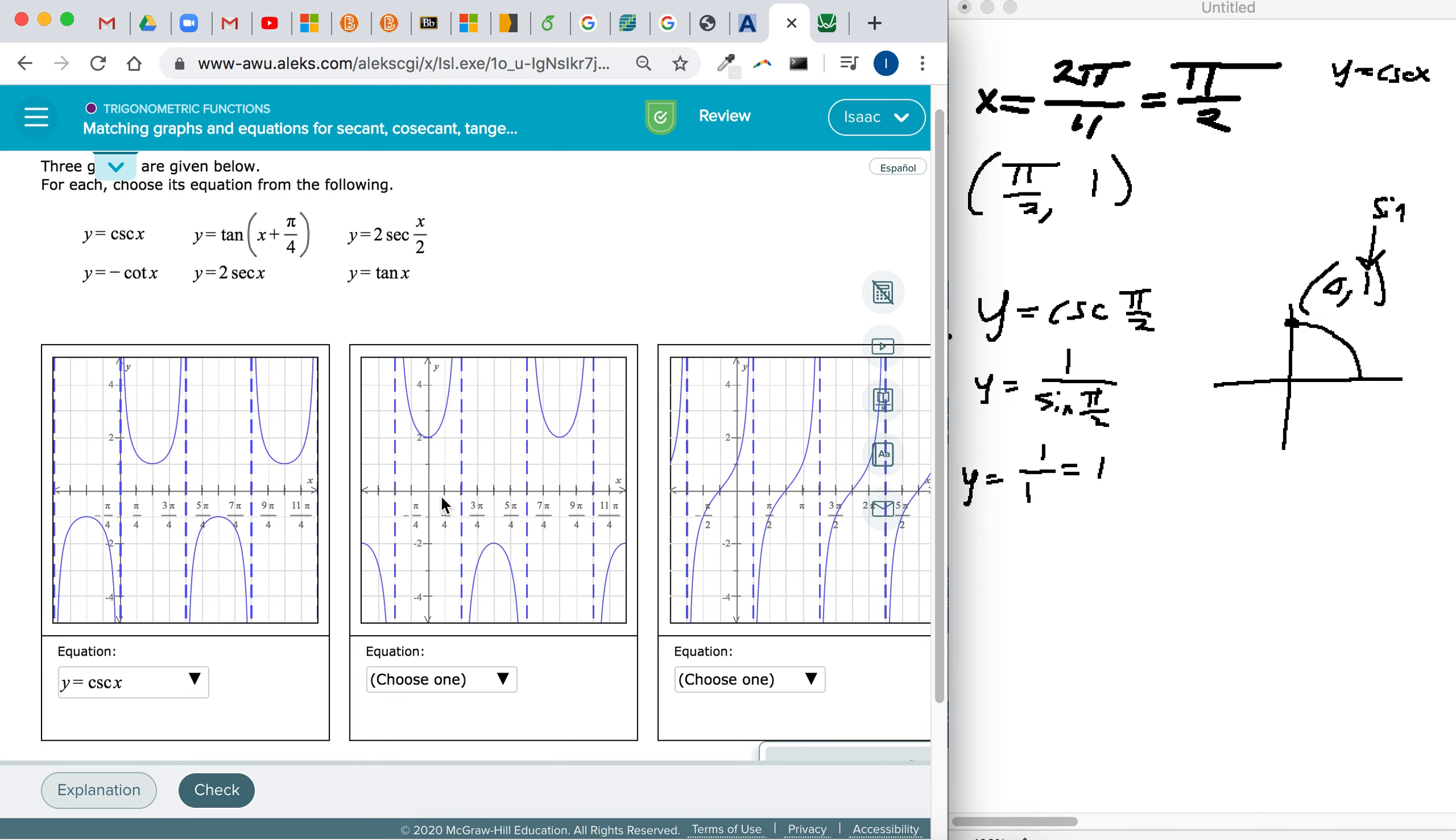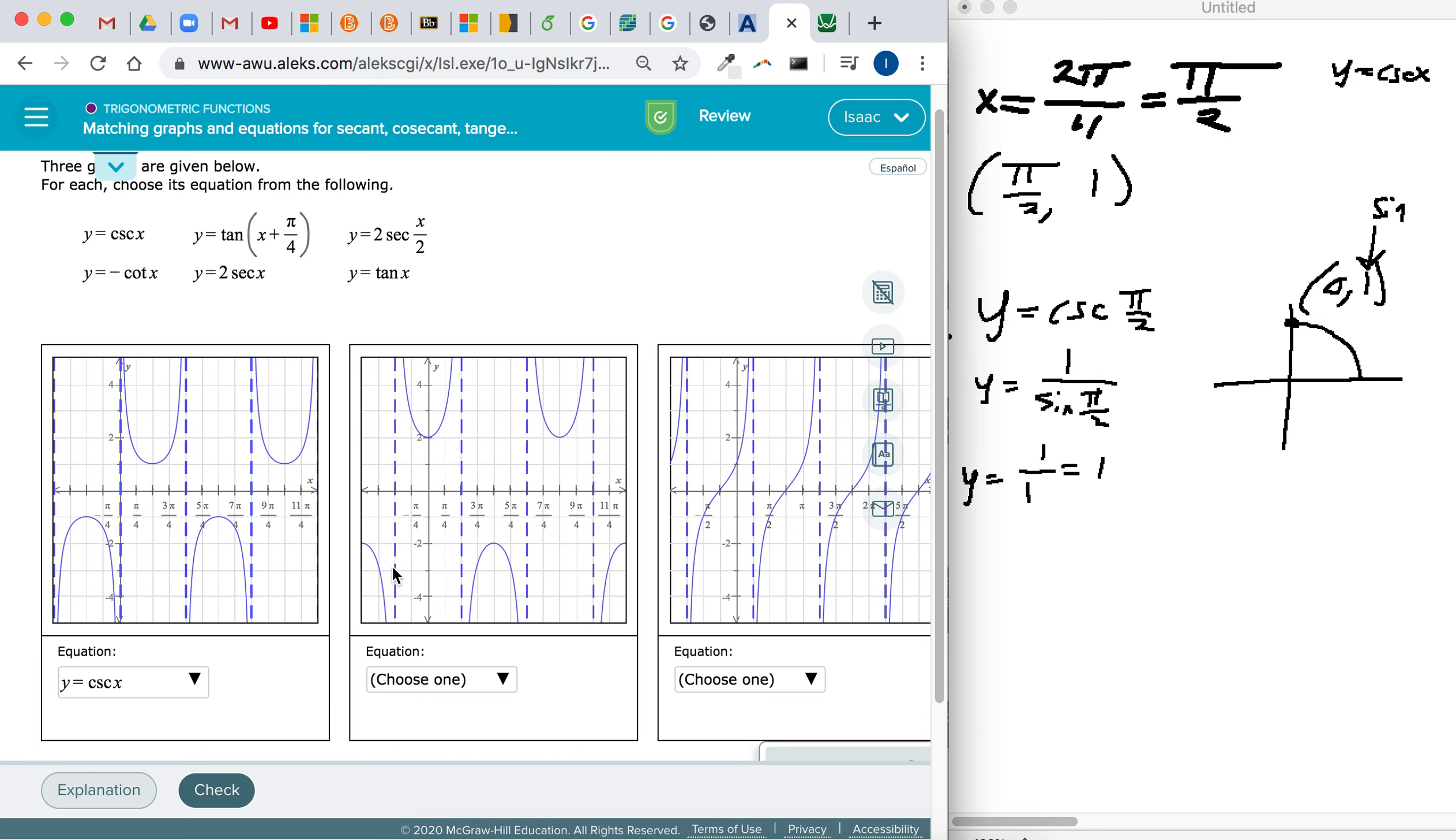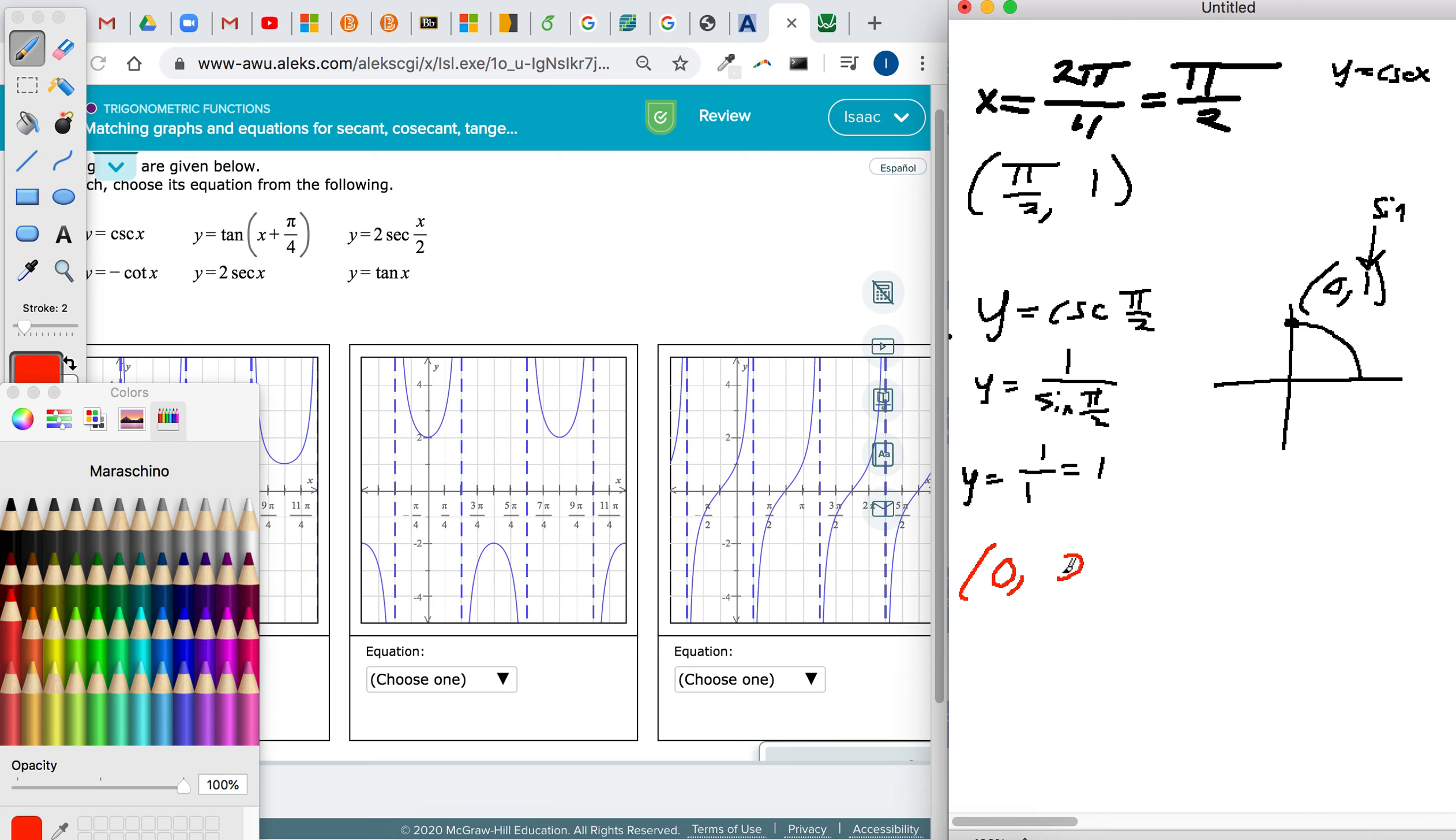So let's check, do the same thing for this one. This graph, if you plug in x equals 0, right on the y-axis, if you plug in 0 in for x, you should get out 2 for y.